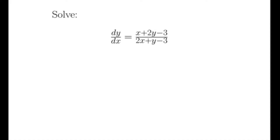Note that in order to solve this kind of equation, first we need to solve the linear equations: x + 2y - 3 = 0, which is equation number 1, and 2x + y - 3 = 0, which is equation number 2.